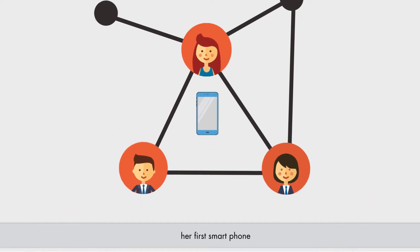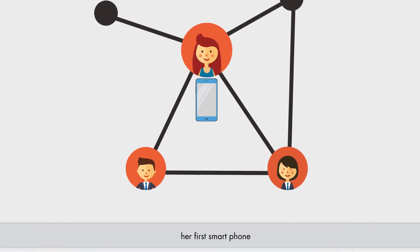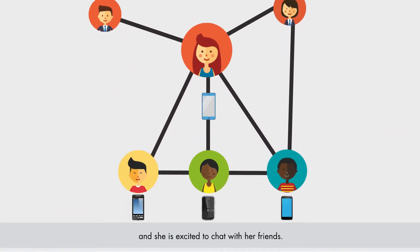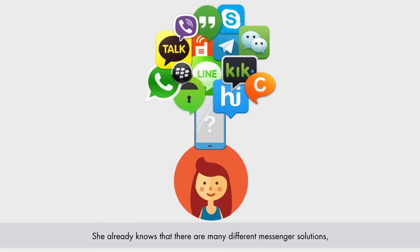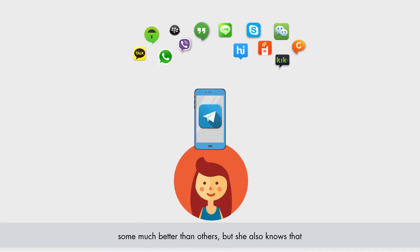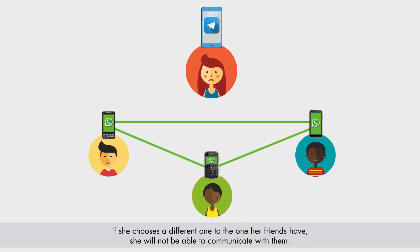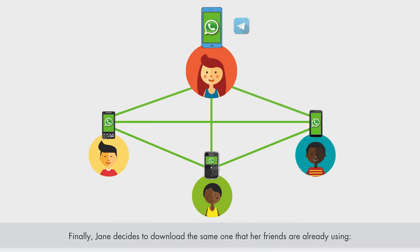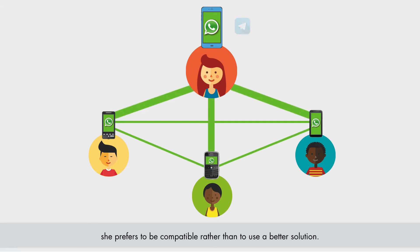Jane finally has her first smartphone, and she is excited to chat with her friends. She already knows that there are many different messenger solutions, some much better than others. But she also knows that if she chooses a different one to the one her friends have, she will not be able to communicate with them. Finally, Jane decides to download the same one that her friends are already using. She prefers to be compatible rather than to use a better solution.